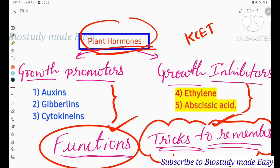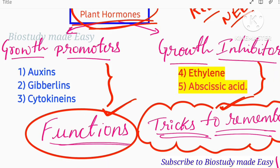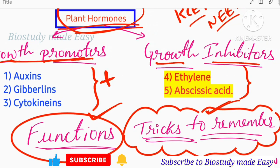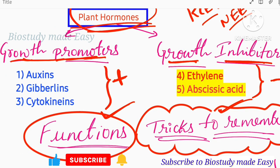So plant hormones are classified into 2 types: Growth Promoters and Growth Inhibitors. Growth Promoters are 3 types — auxins, gibberellins, and cytokinin. Growth Inhibitors are 2 types — ethylene and abscisic acid. So with 2 types and 5 plant hormones total.